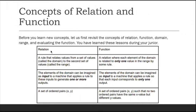Regarding ordered pairs: a relation is simply a set of ordered pairs (x, y). A function is a set of ordered pairs (x, y) such that no two ordered pairs have the same x value but different y values. If an ordered pair violates this, it is no longer called a function — only a relation. All relations that are not functions are still considered relations.